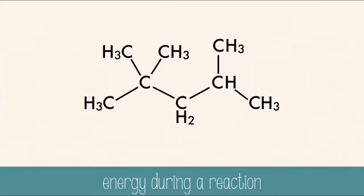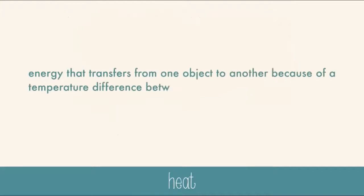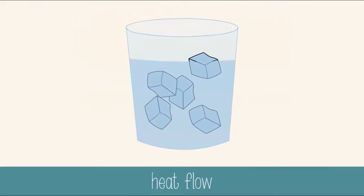Chemical energy is the energy stored in the bonds of atoms; the kinds of atoms and their arrangements determine how much energy is stored. Thermal energy is the internal energy of a substance — we can't actually measure it, but we can calculate the energy when it moves, which we call heat. Heat always flows from the warmer object to the colder object. In the case of a cup of water with ice, the water is warmer than the ice, so heat flows from the water to the ice.